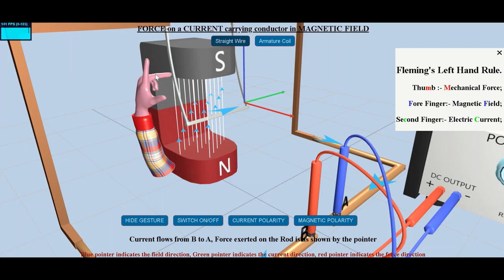The direction of the force on the current carrying conductor that is placed in a magnetic field can be found by Fleming's left hand rule.